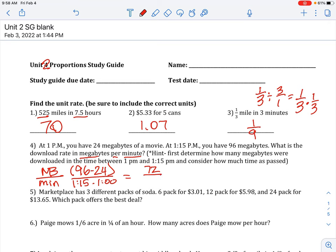Work this out, you have 72 megabytes when you subtract your megabyte numbers, and there are 15 minutes on the bottom. Divide that out, you get 4.8 megabytes per minute as your answer.